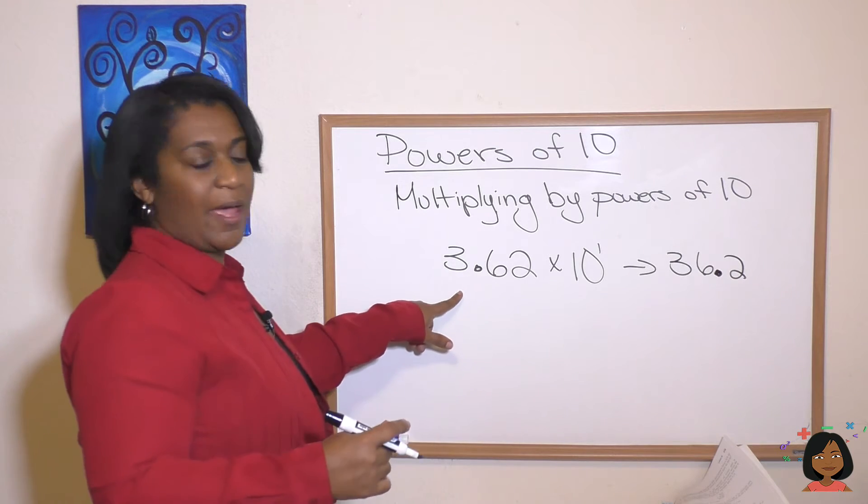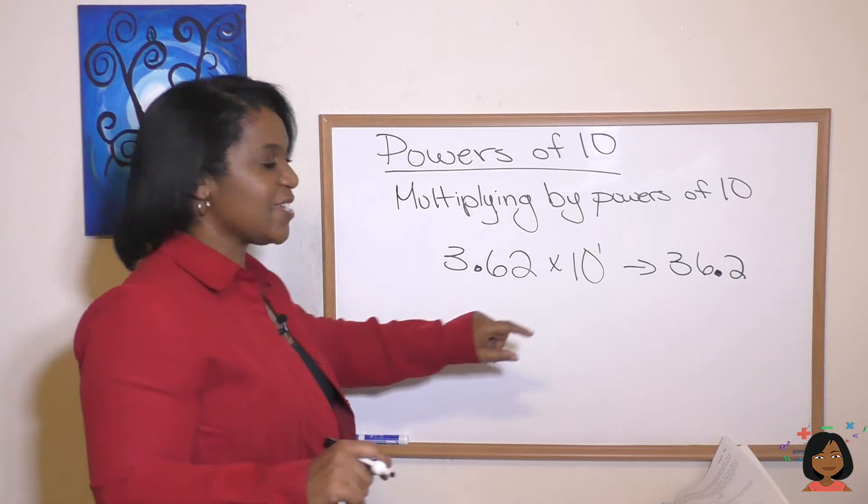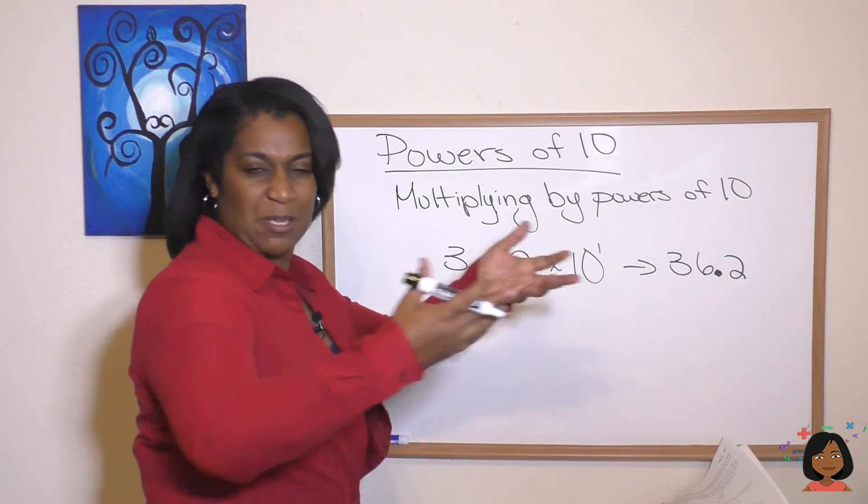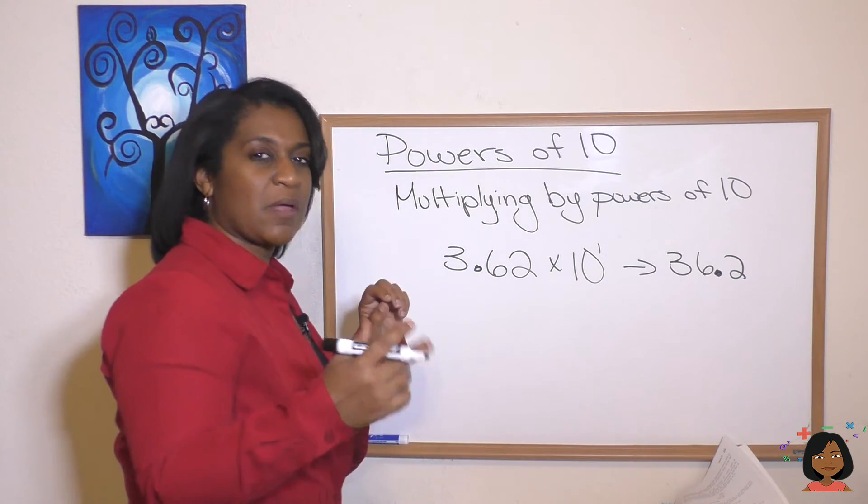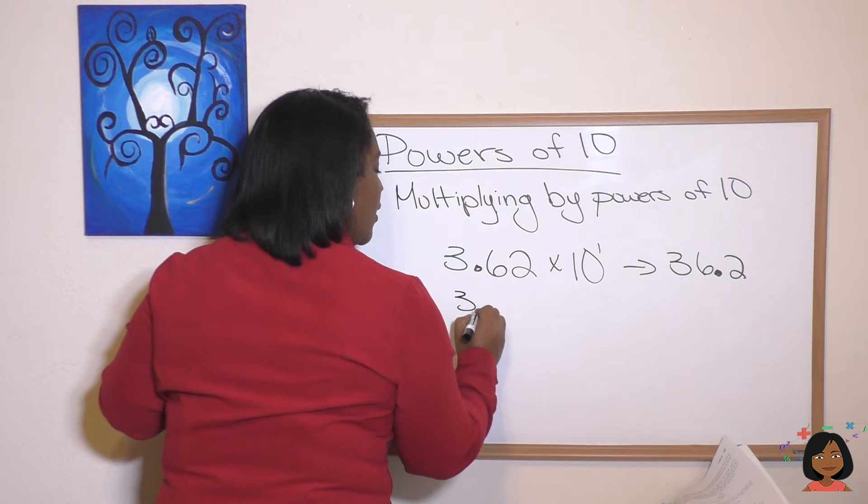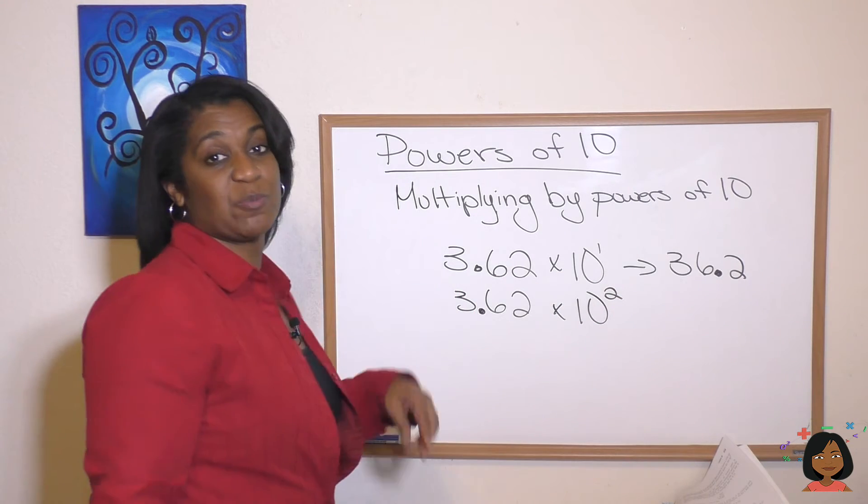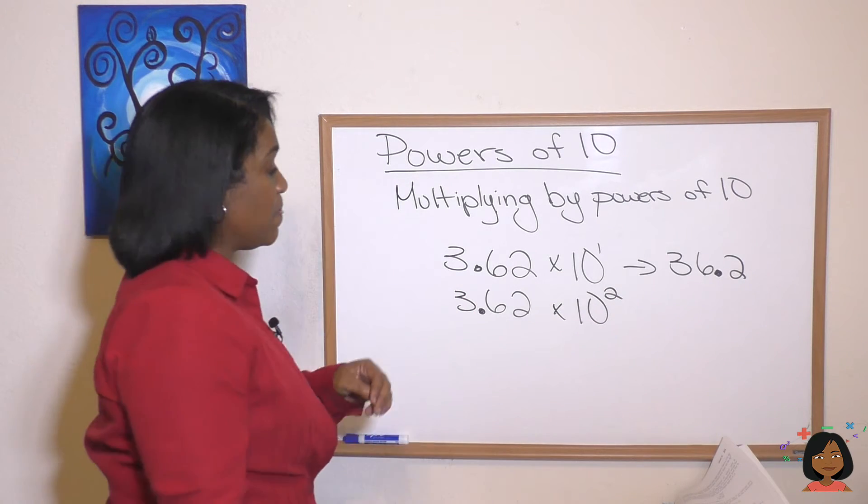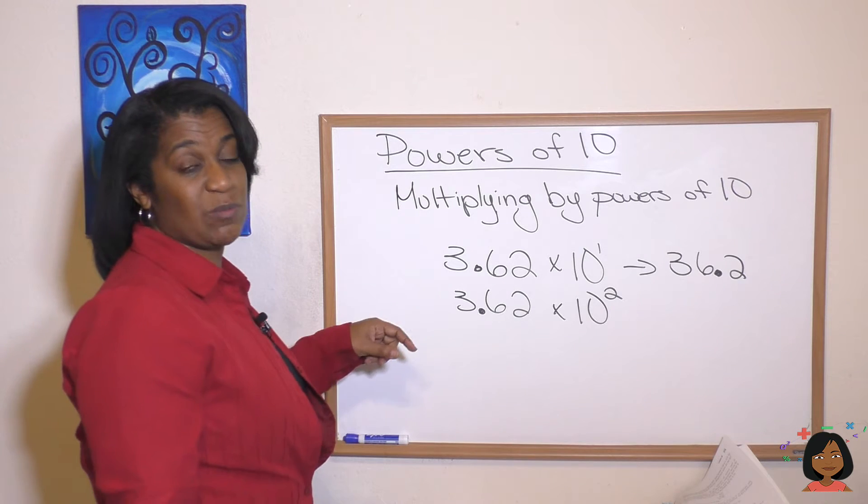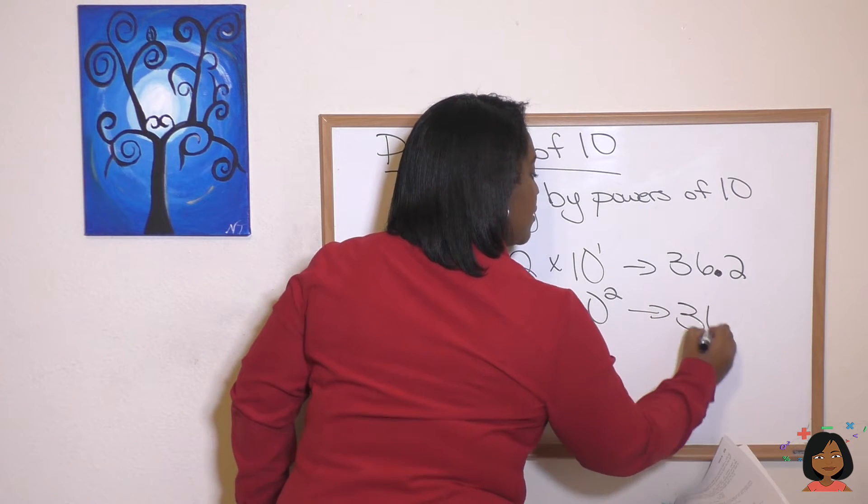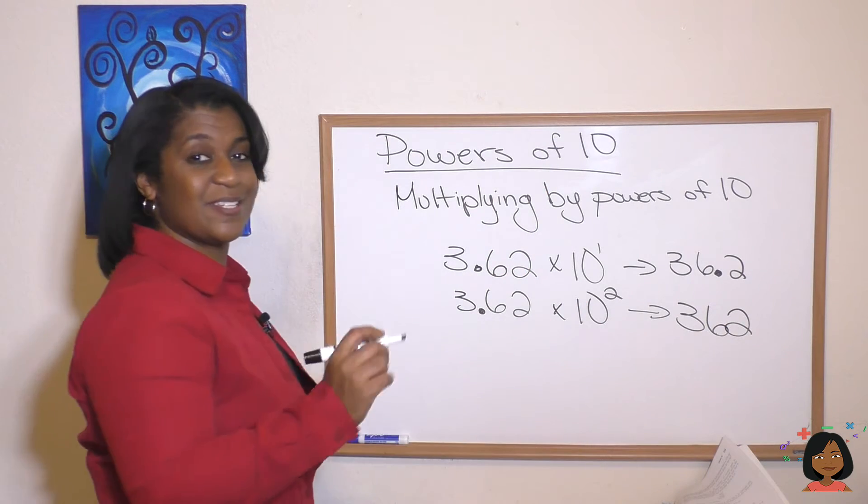We know we multiply, essentially this is kind of like saying 10 times 3 and something. So we're going to move it. We know it's going to be a bigger number, right? 30 something. Okay, try it again. 3.62. But this time we're going to multiply it by 10 to the second power, which means there's two zeros in that 10. So this time we're going to move our decimal point two places to the right. Which is 362.